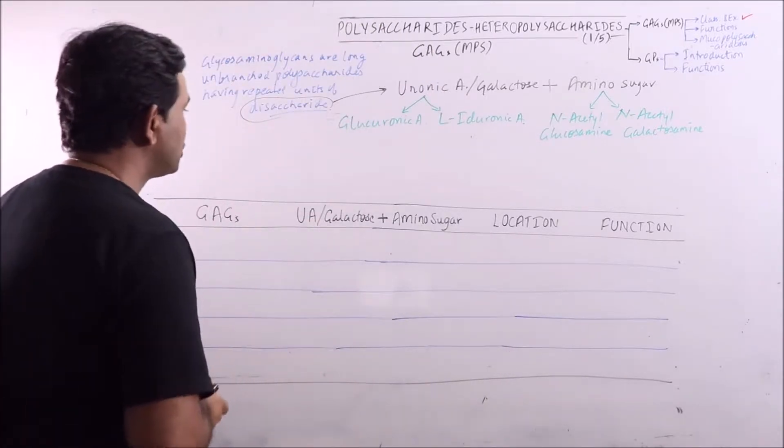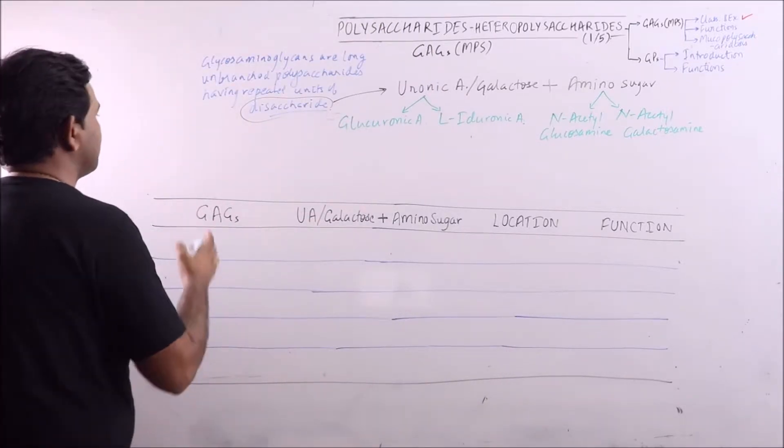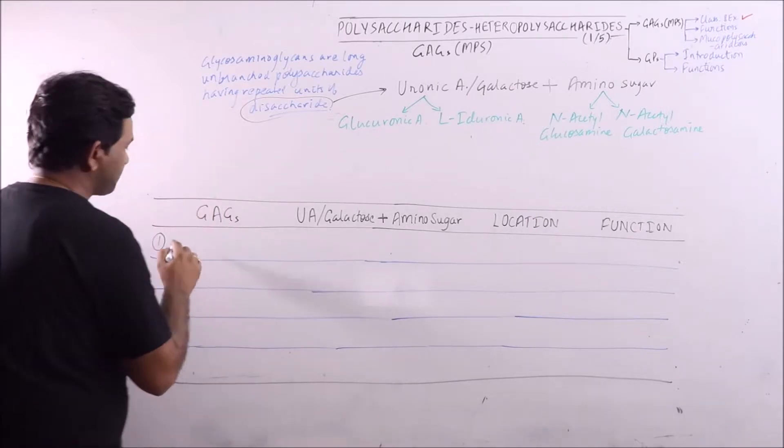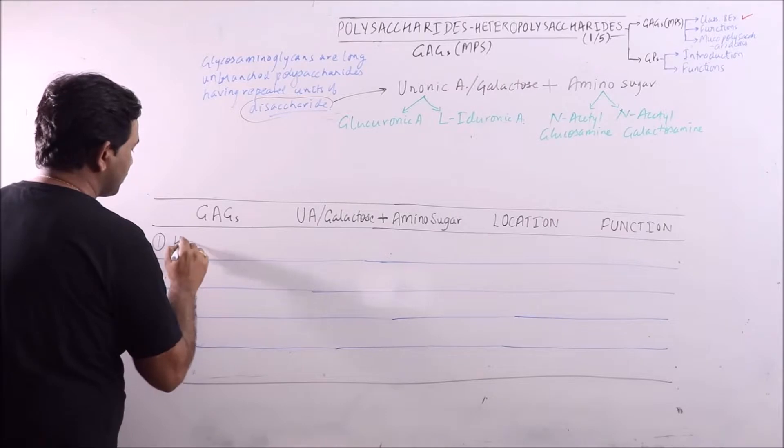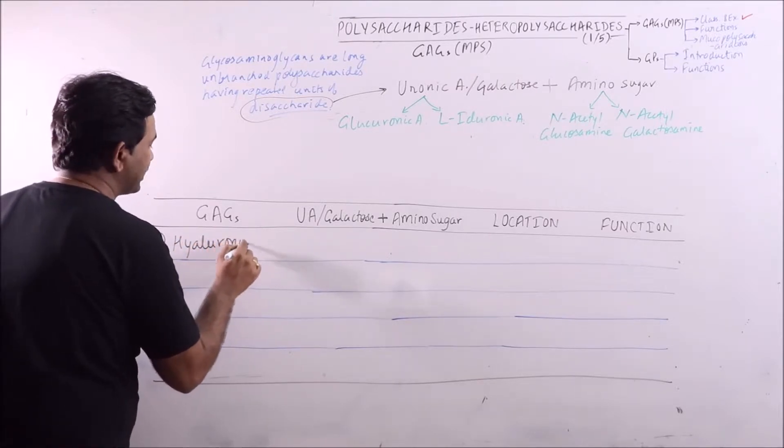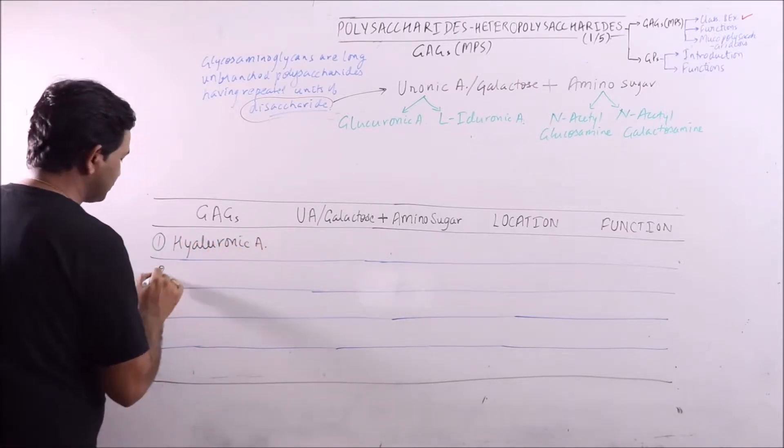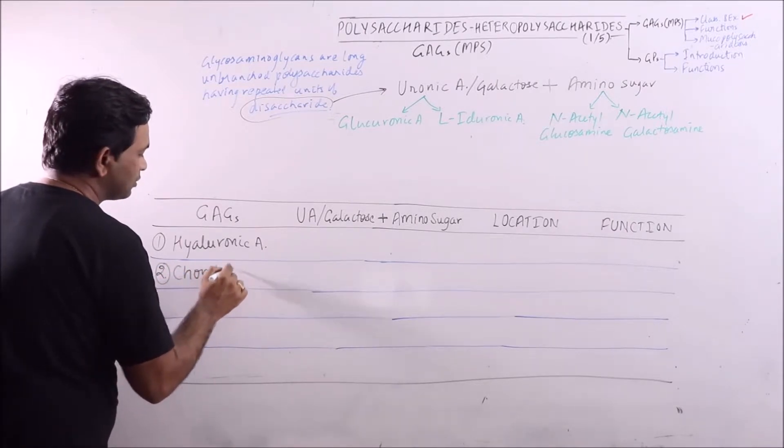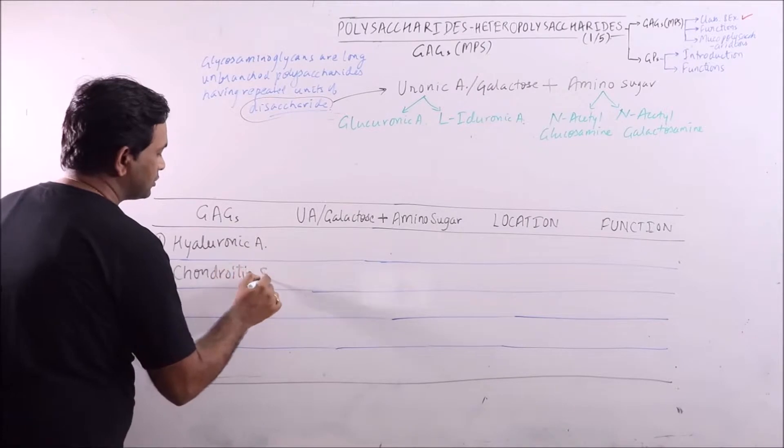The most important GAGs are hyaluronic acid, chondroitin sulfate,